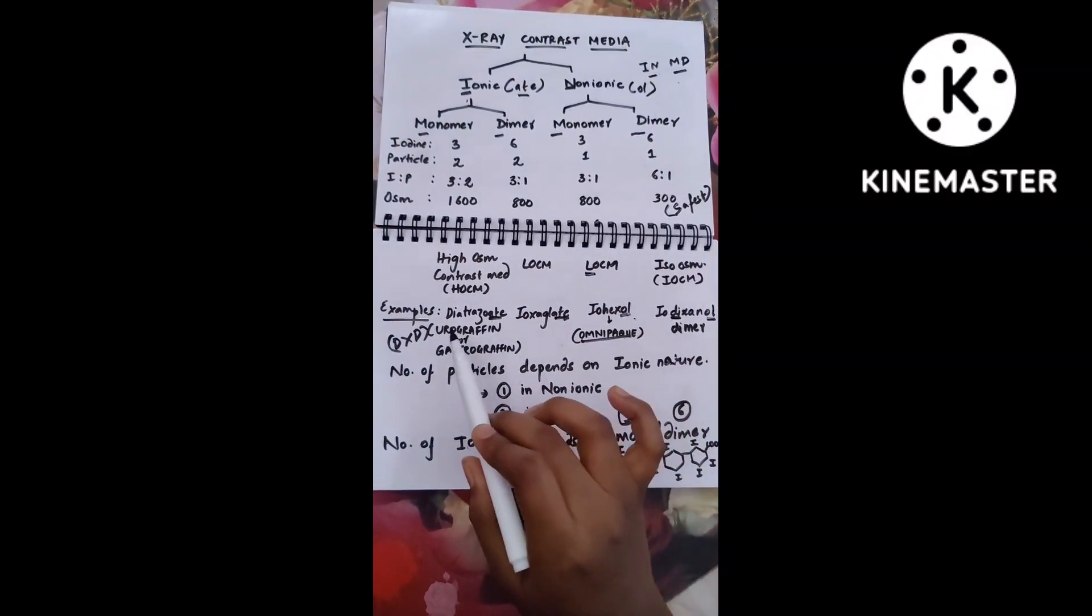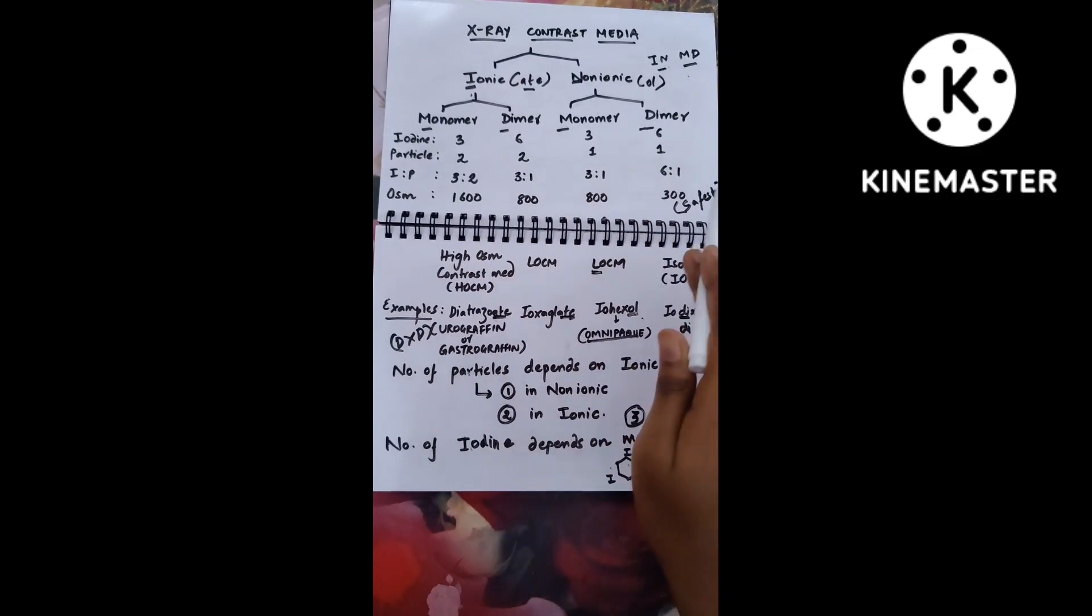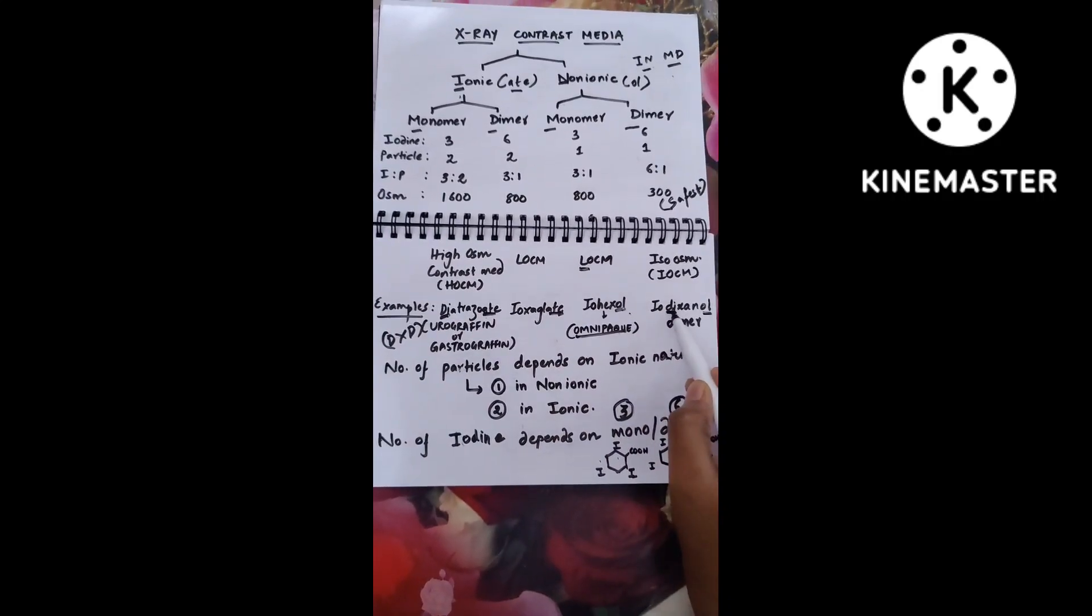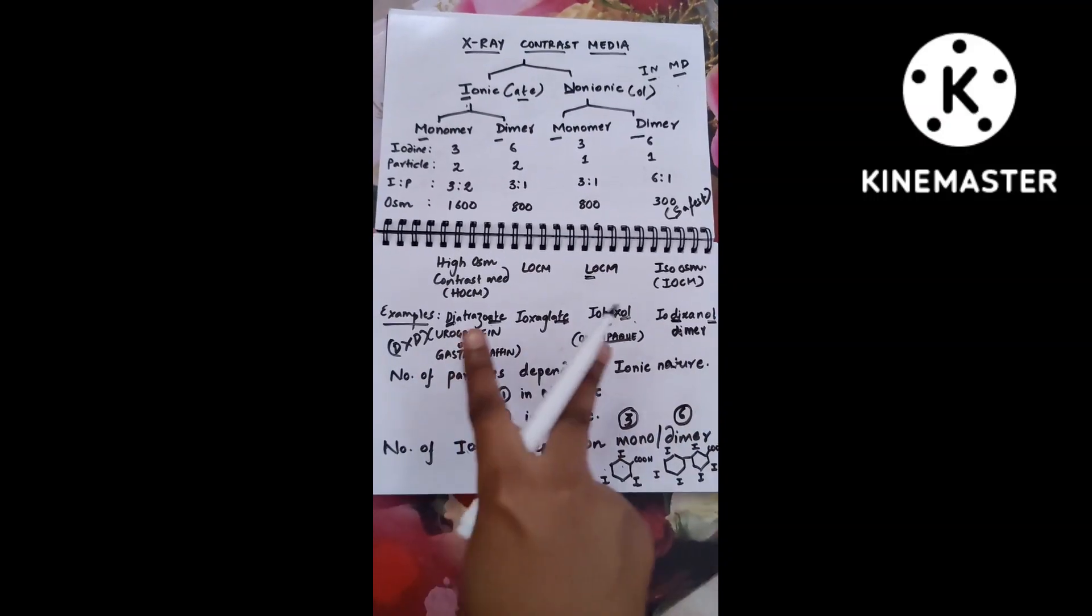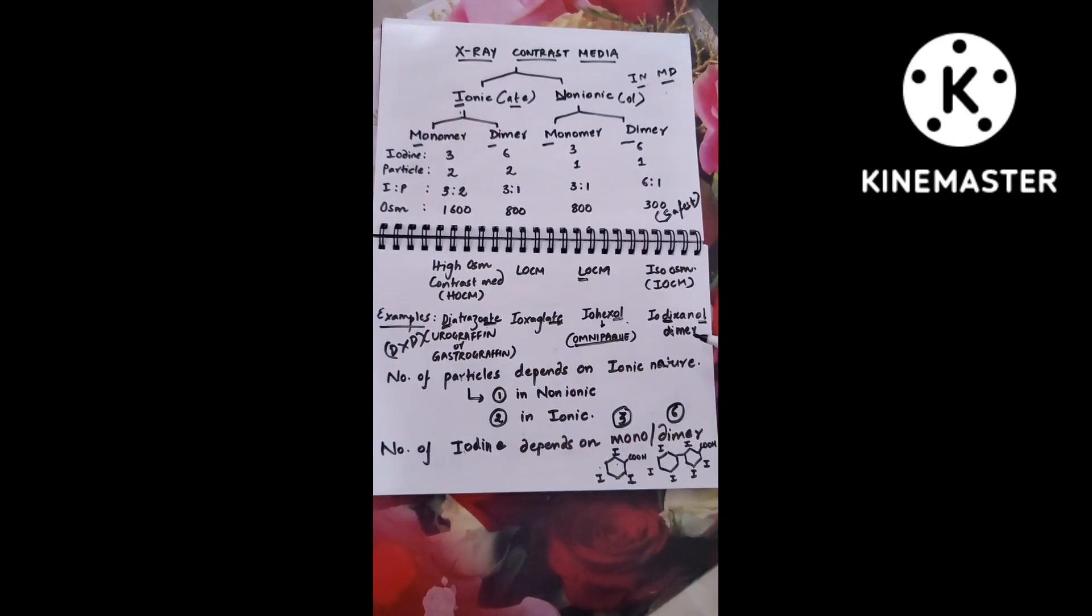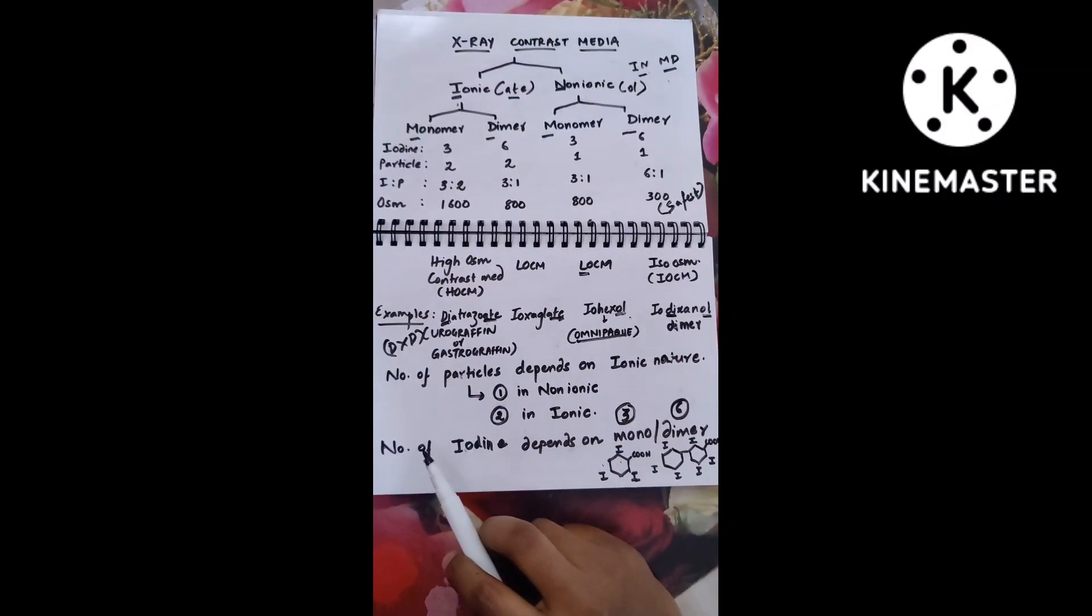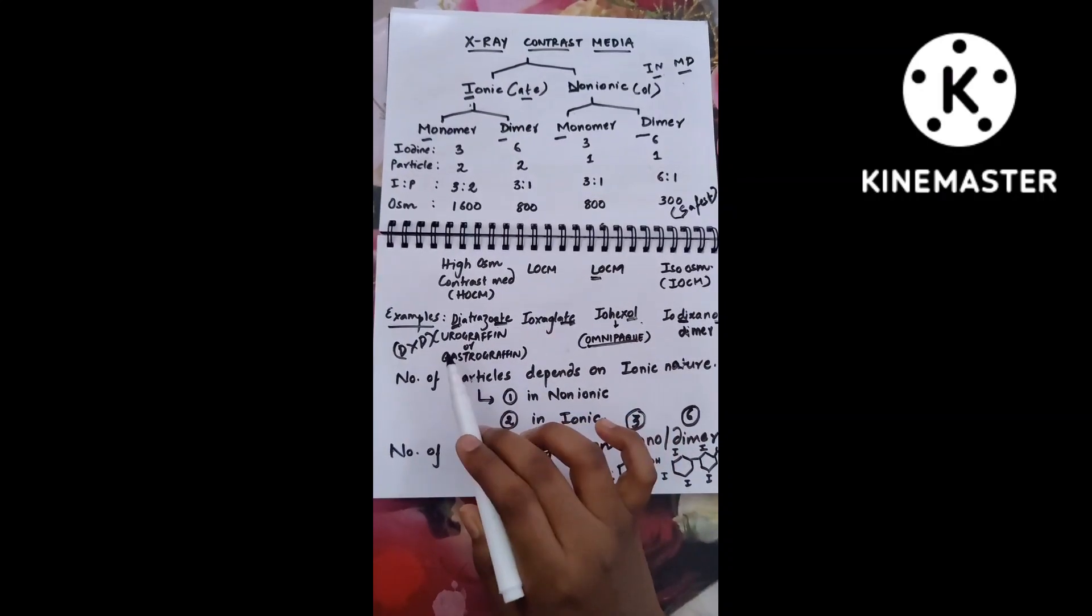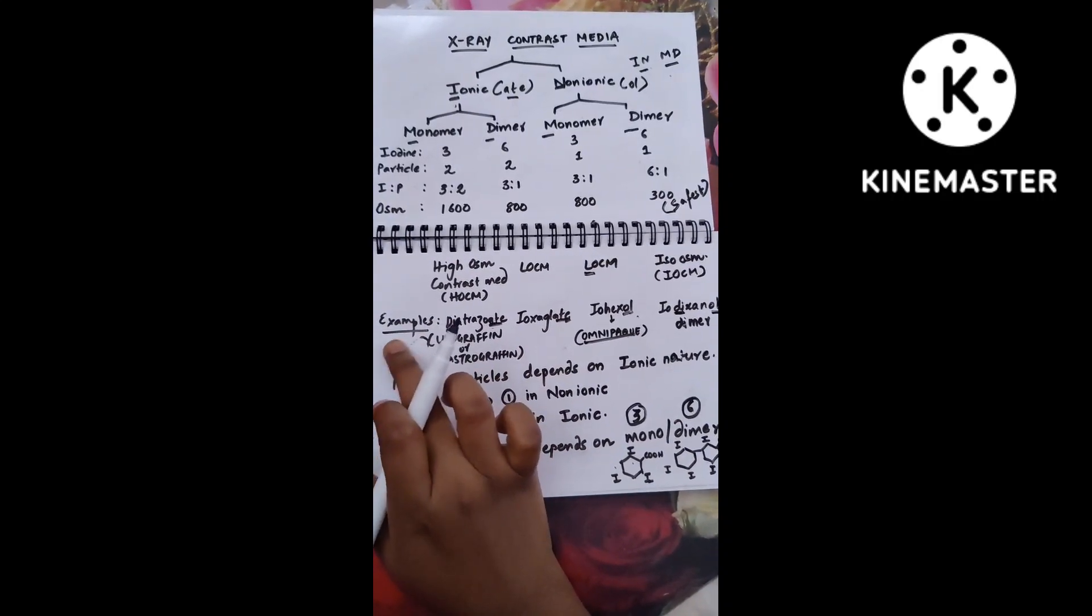How to remember whether diatrizoate is monomer or dimer? If you remember the same order like MD and MD, the first example starts with the letter 'di' and the last example also has 'di'. So diatrizoate and iodixanol both come in the end - ionic monomer is one thing and non-ionic dimer is the other. The remaining ioxaglate and iohexol are in between.